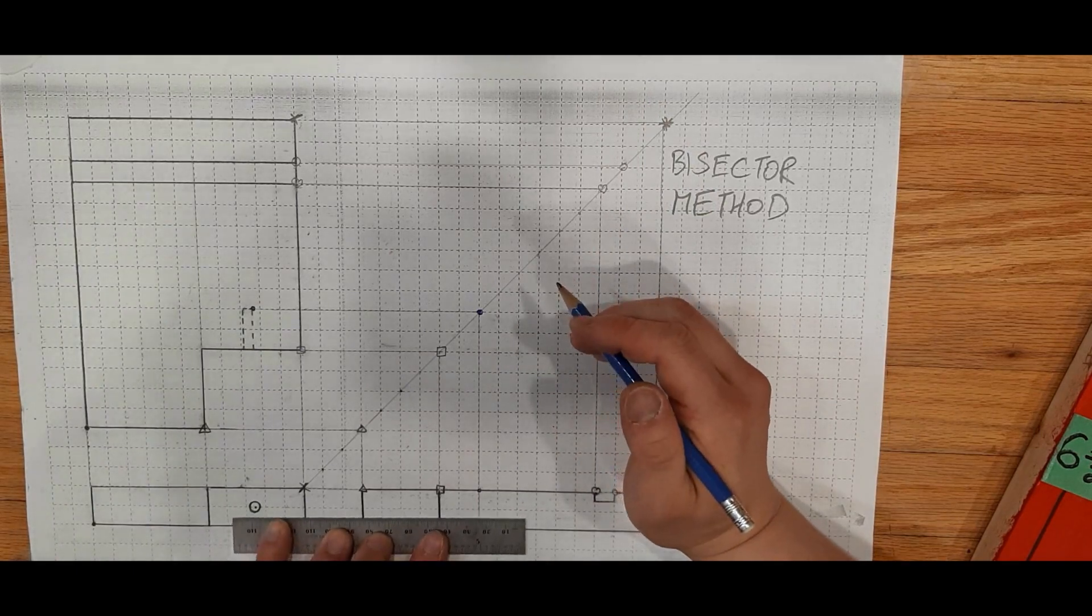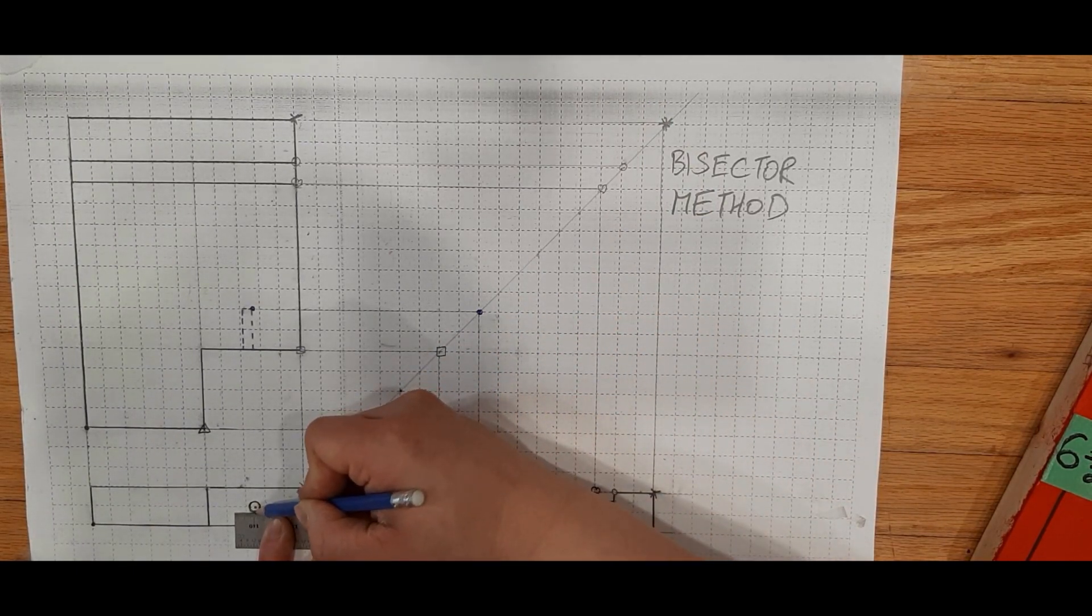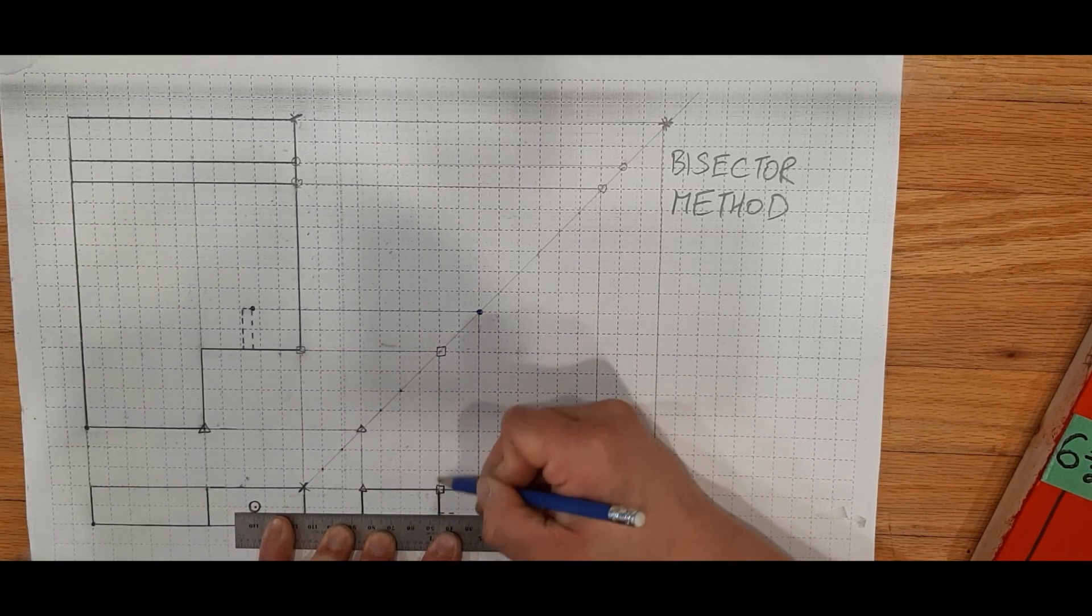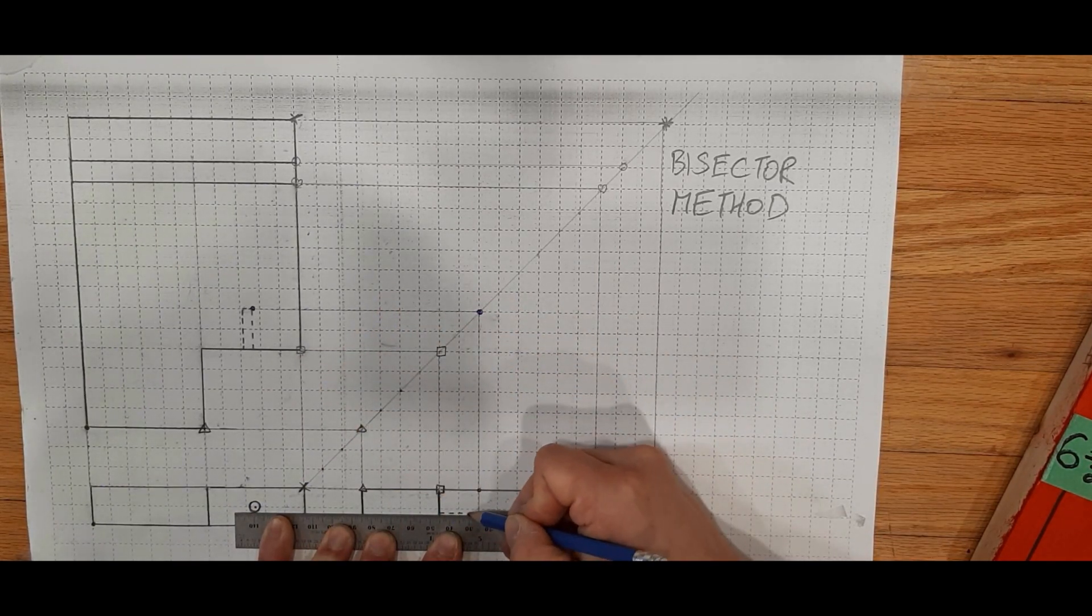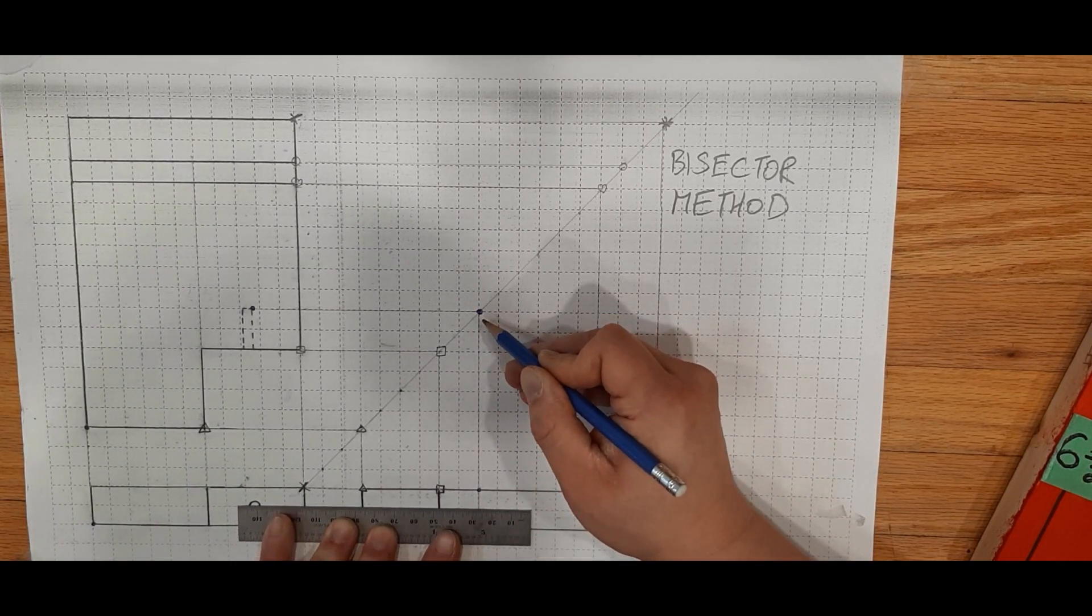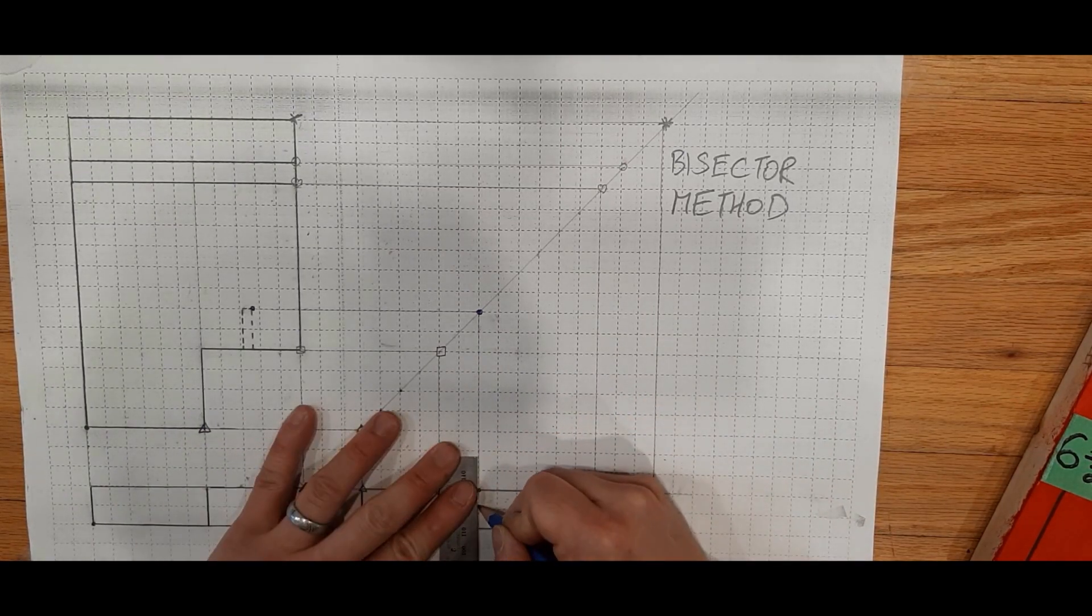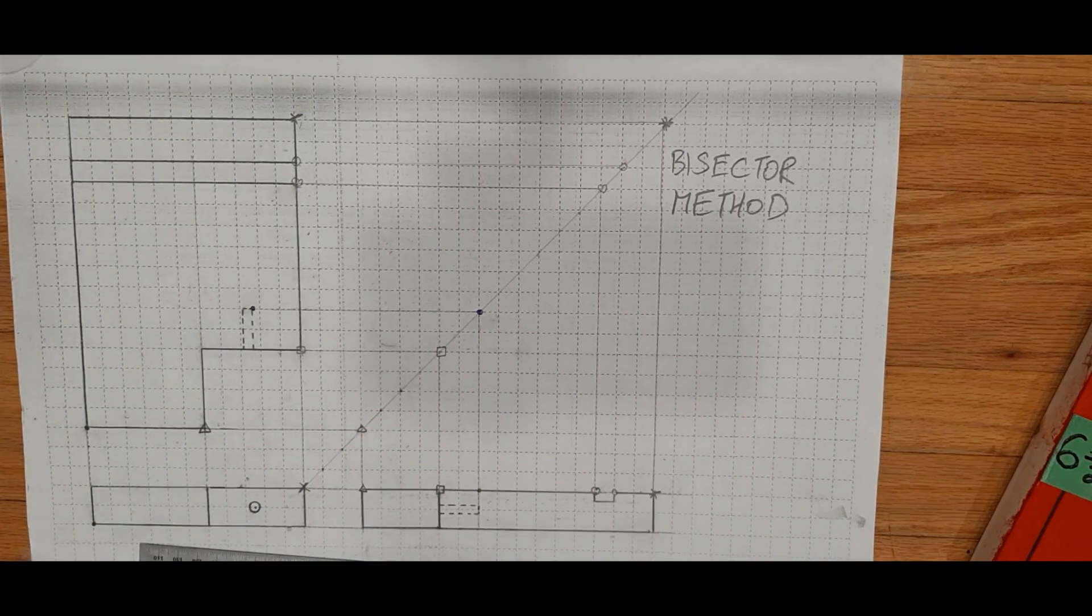The rest is just drawing lines. So there's the bottom of my hole, starts at the square, ends at the blue dot. And I know that that's where it's supposed to end because of the bisector. And that's what it looks like when it's done.